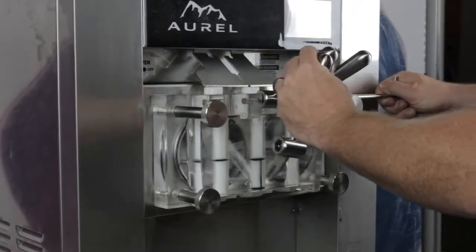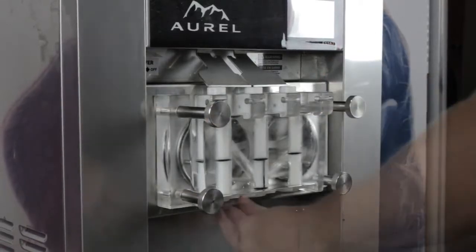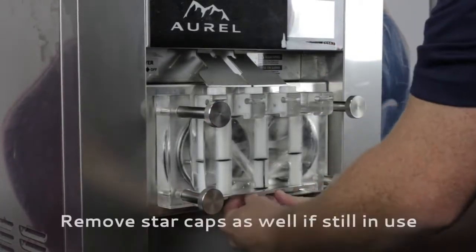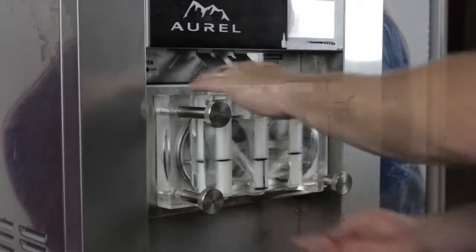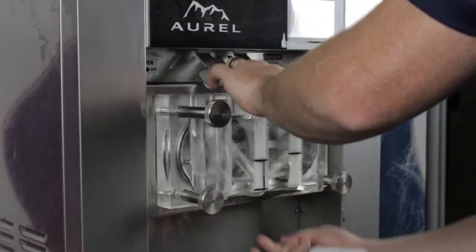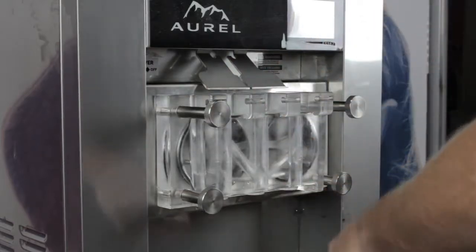Then carefully slide out the handle pin from the dispenser door assembly and remove the three handles. Remove all three draw valves from the dispenser door and unscrew the four door nuts.